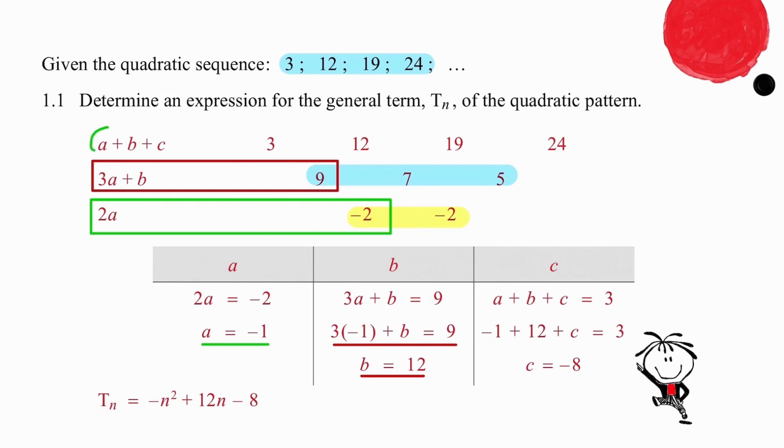One last time we are going to set a plus b plus c equal to 3. That means that we can use a and b and the equation we've just worked out to solve for c and c is equal to minus 8. So we have the equation tn is equal to minus n squared plus 12n minus 8.